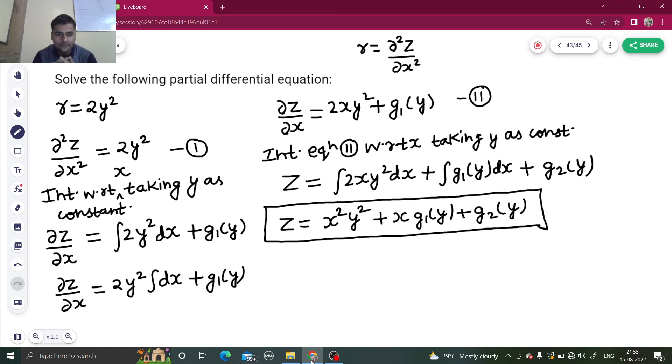I hope you understood this. It was again a very simple question. We had del 2z by del x square, so we integrated with respect to x in order to get del z by del x. From there on, we again integrated with respect to x to get z. While integrating with respect to x, y is treated as constant and you have to keep in mind that in place of constant c, we put any function of y because y is treated as constant in both the cases. I hope you understood this. Thanks and have a nice day.